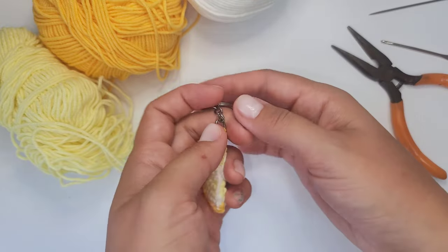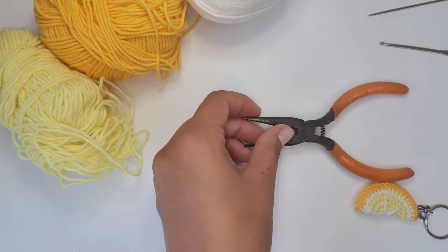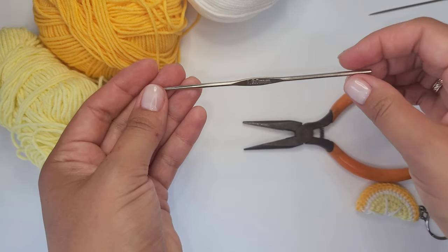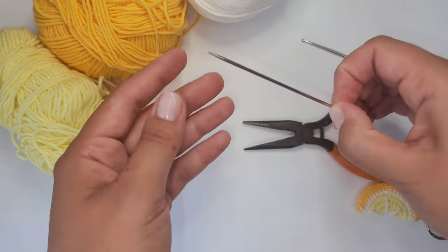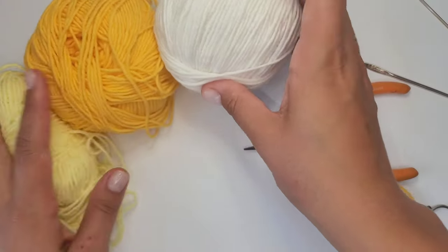You'll need for that a keychain basis, then pliers, a 1.9 mm crochet hook, a sewing needle and 3 different colors of yarn. You'll need scissors as well.